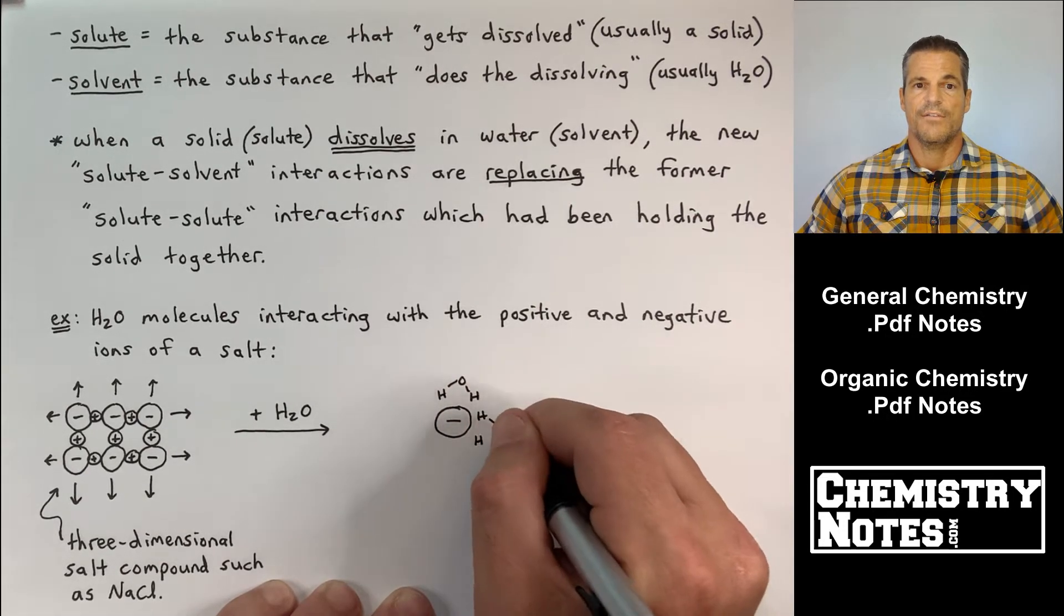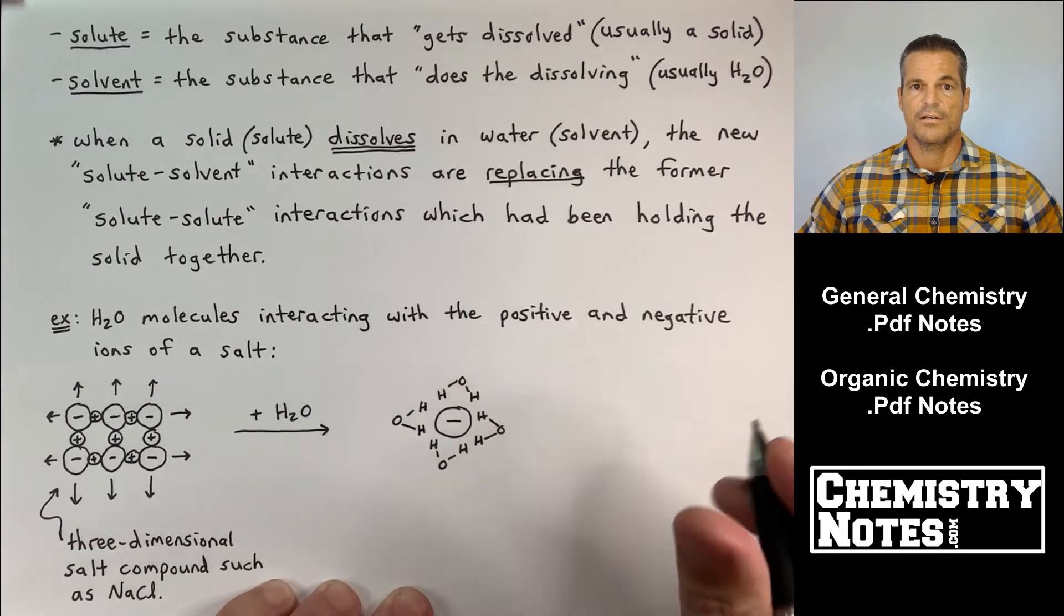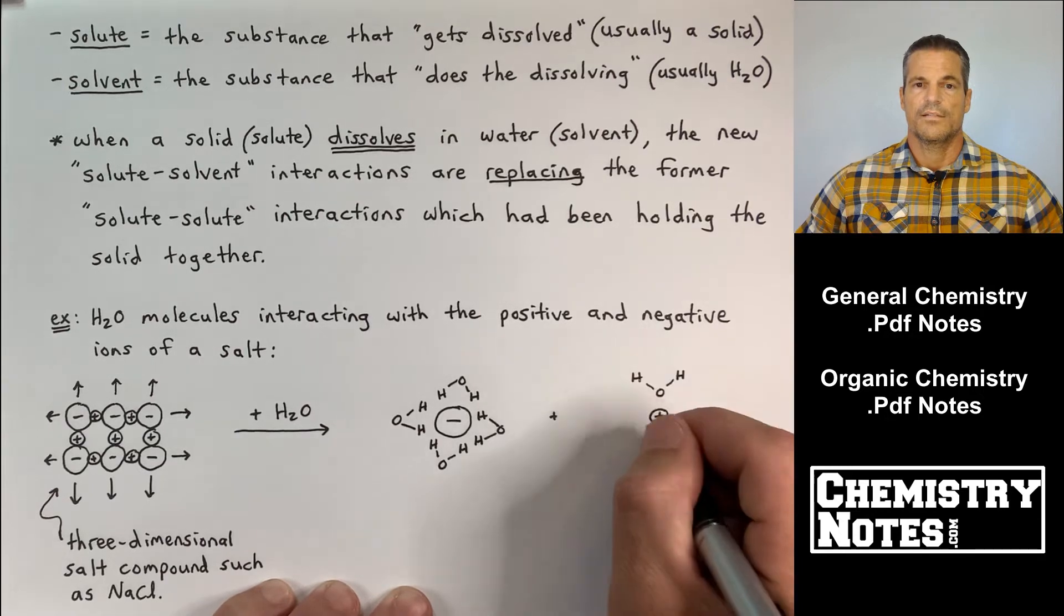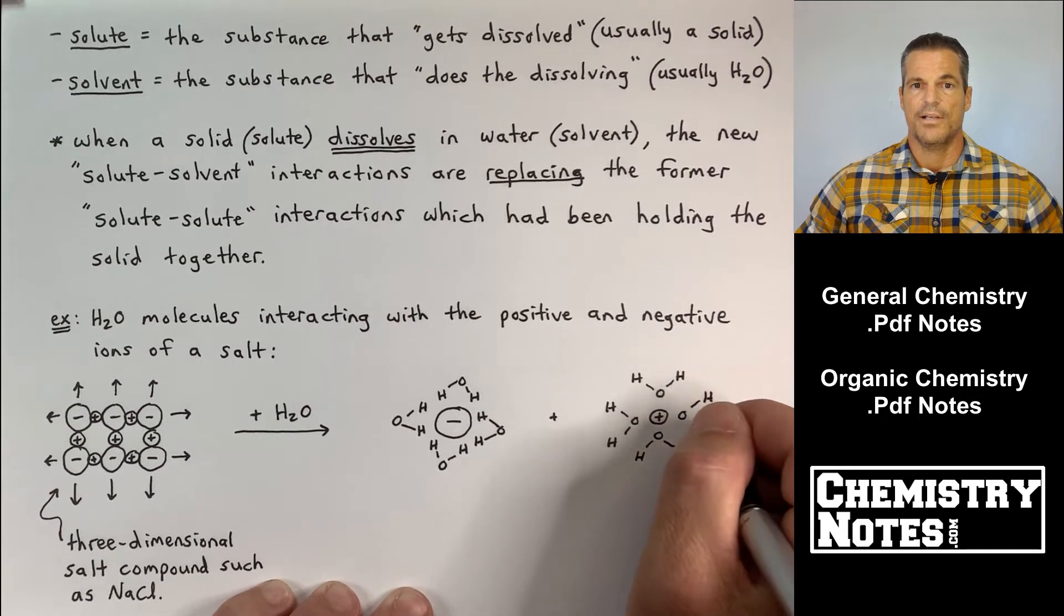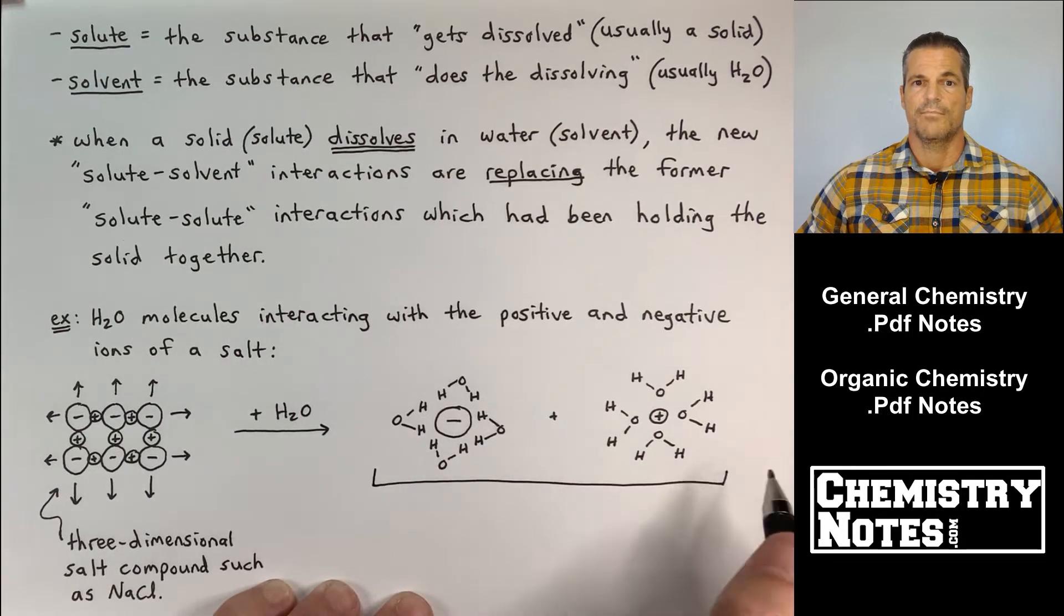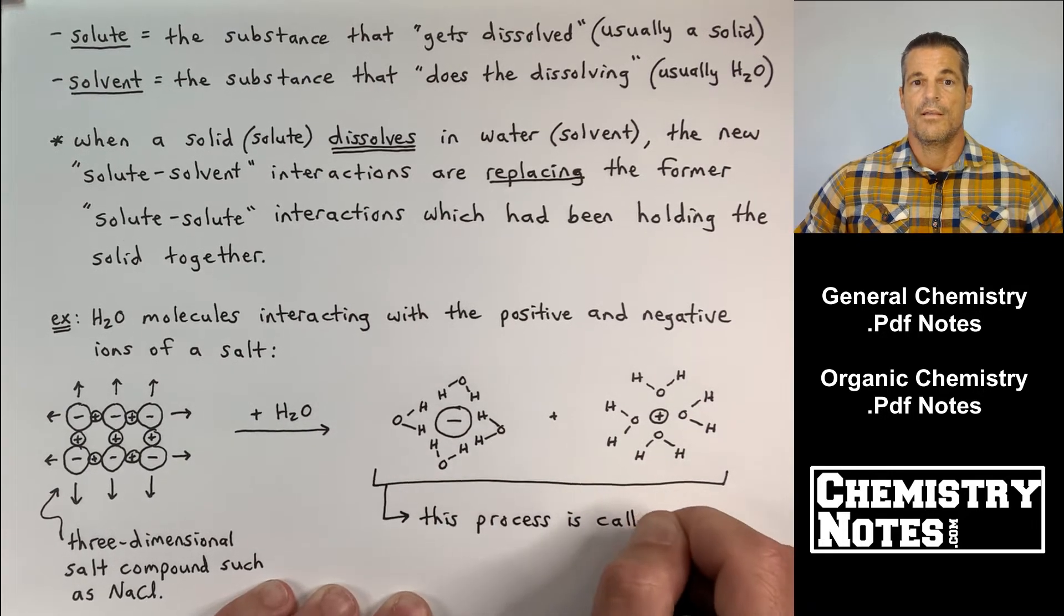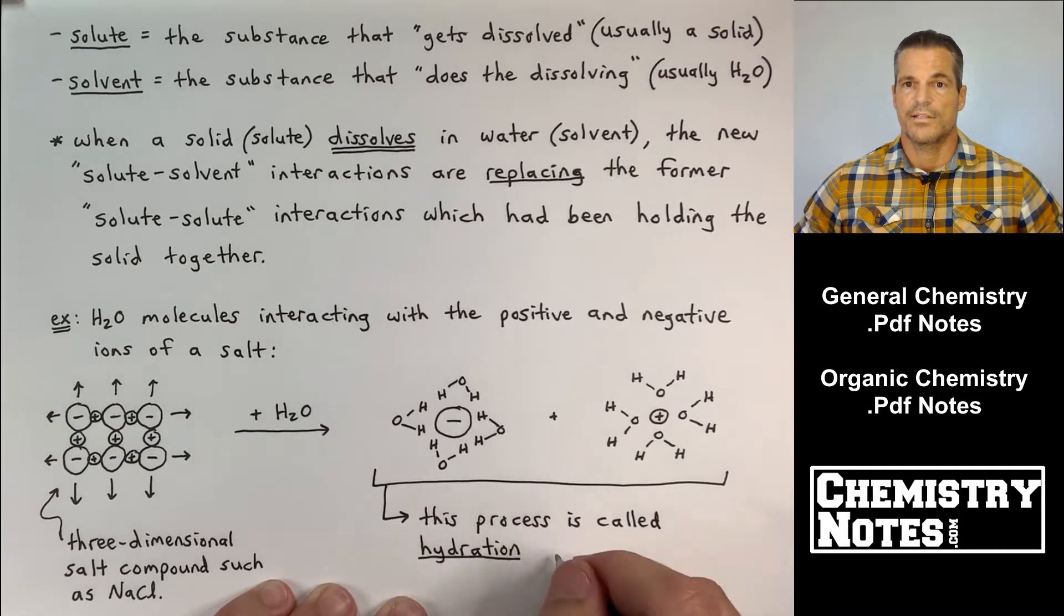When we add water to this three-dimensional salt compound, the positive end of the water molecule, the hydrogen ends, are going to gather around the minus ion. Whereas the plus ion, the Na plus ion, is being surrounded by the oxygen ends of the water molecules. And then what happens is we slowly break apart the salt crystal and that process is called hydration or solvation. For water we use hydration.